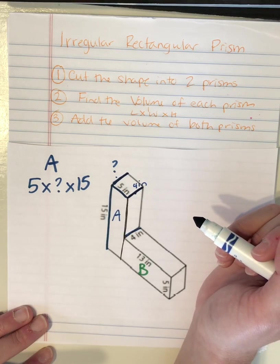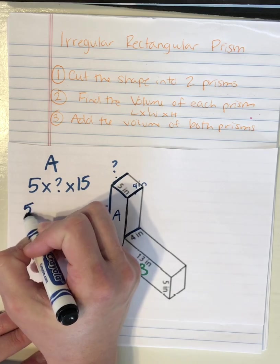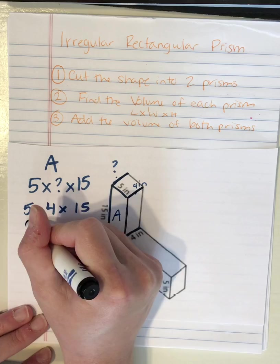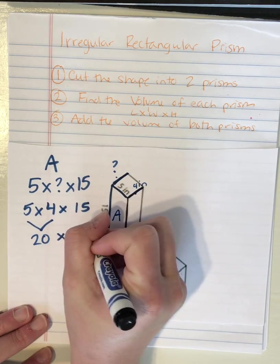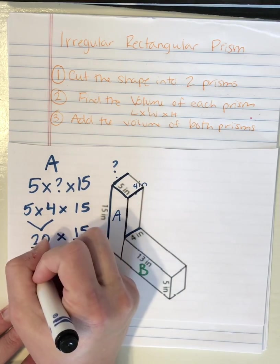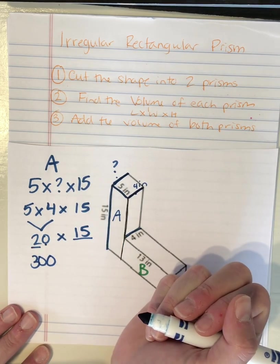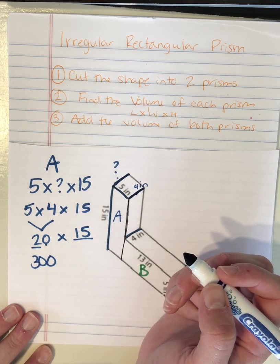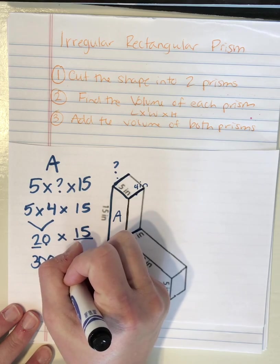So now I can find the volume of rectangular prism A. I'm gonna do 5 times 4 times 15. 5 times 4 is 20 and 20 times 15. I know 15 times 2 is 30. Then I'm gonna add my 0. So 20 times 15 is 300. So the volume of rectangular prism A is 300 cubic inches.